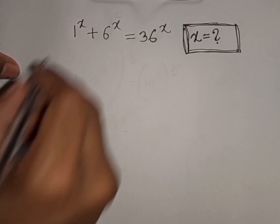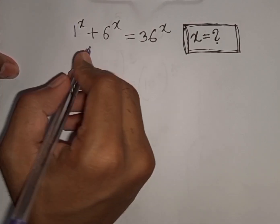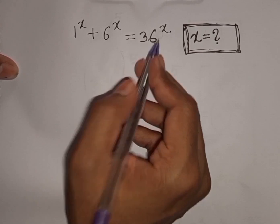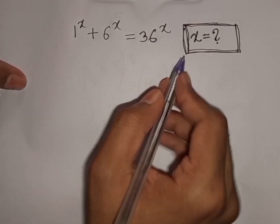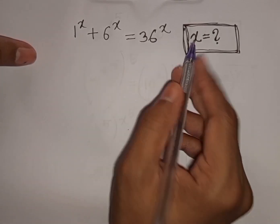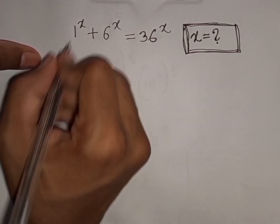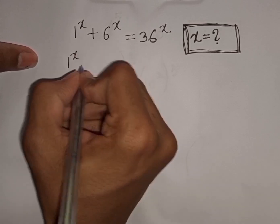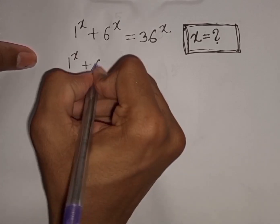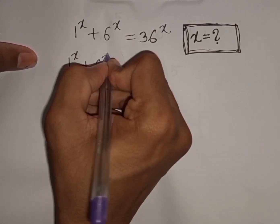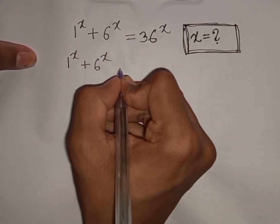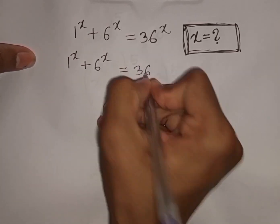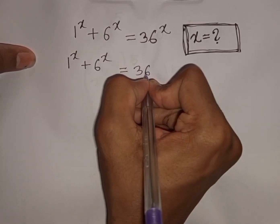How to solve 1^x + 6^x = 36^x. Find the value of x. So, we have 1^x + 6^x = 36^x.